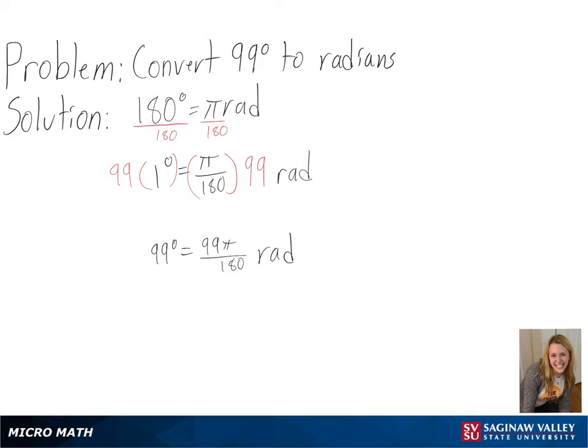And after simplifying, we will get 11 pi over 20 radians as our final answer. Thank you.